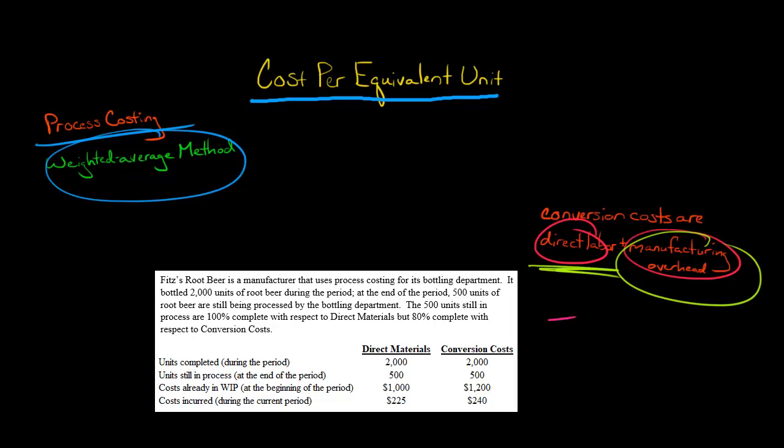To get the cost per equivalent unit, we're going to add the total cost and then divide it by the number of equivalent units. We're going to do that for direct materials, and then we're going to do it for conversion costs.